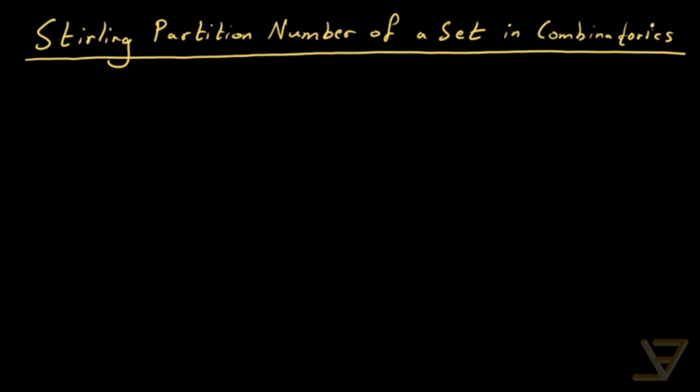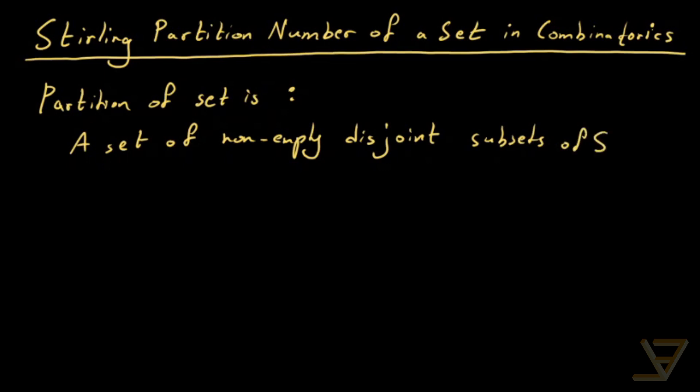Let's say we have a set. Then a partition of the set is a set of non-empty disjoint - and all these words are important - disjoint subsets of S, let's say the set is S, whose union is S.